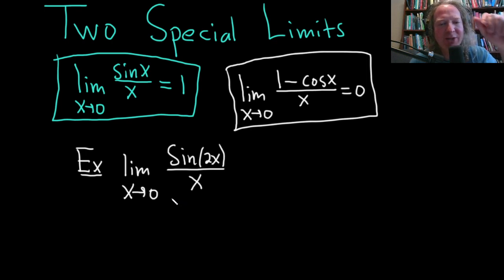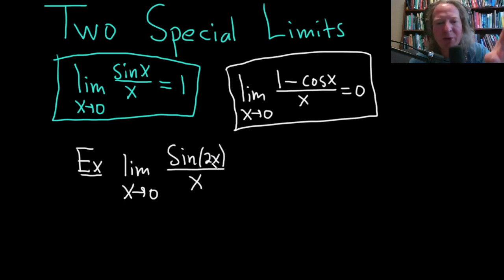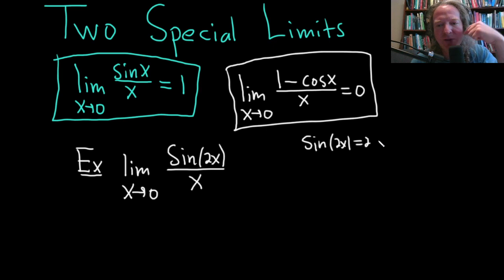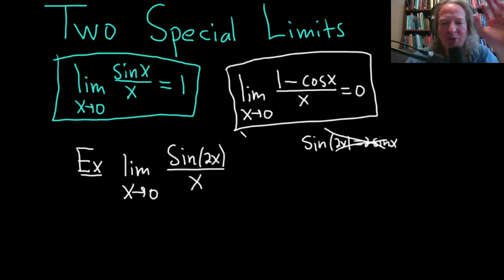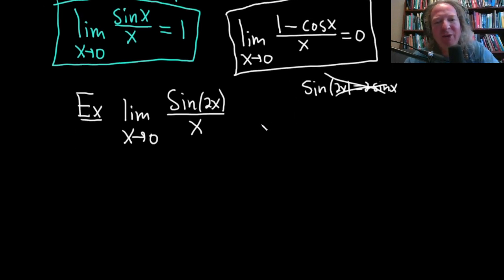First, let me say what not to do. A very common mistake is people think that you can pull out the 2. You cannot pull numbers out of the sine function or the cosine function — that is wrong. Sin 2x does not equal 2 sin x. That's super bad, so just something that needs to be said right away to avoid confusion.